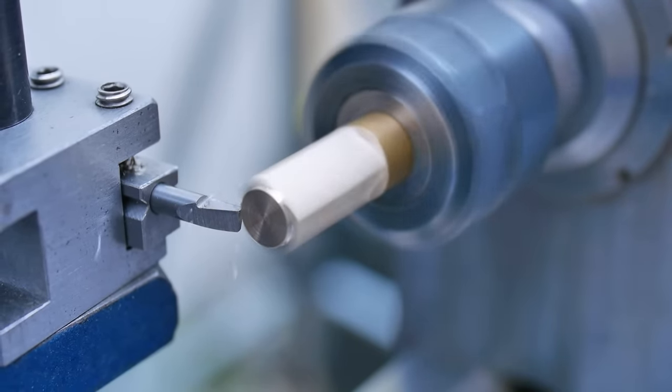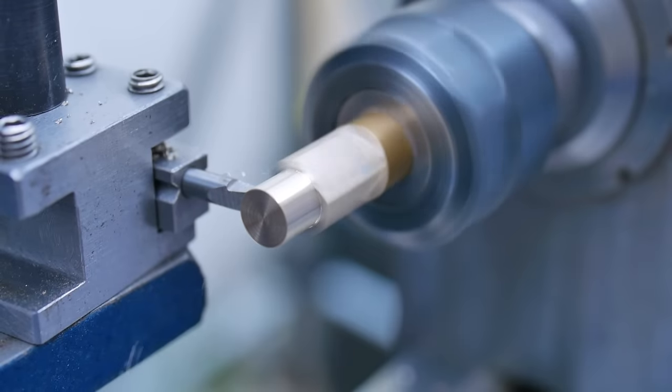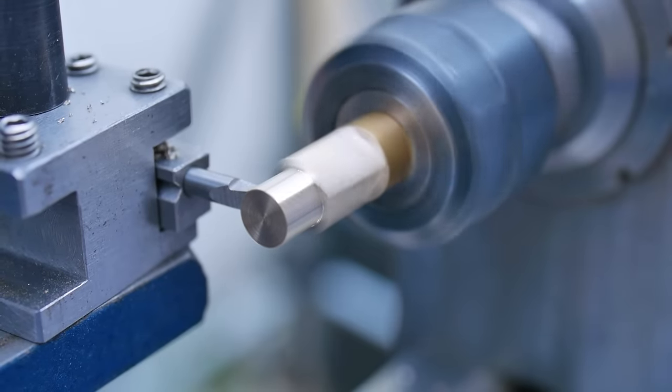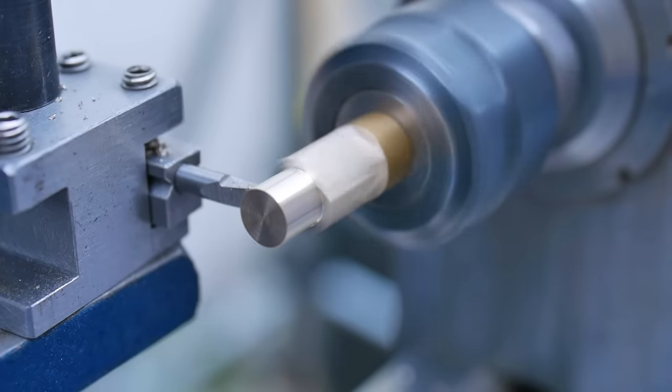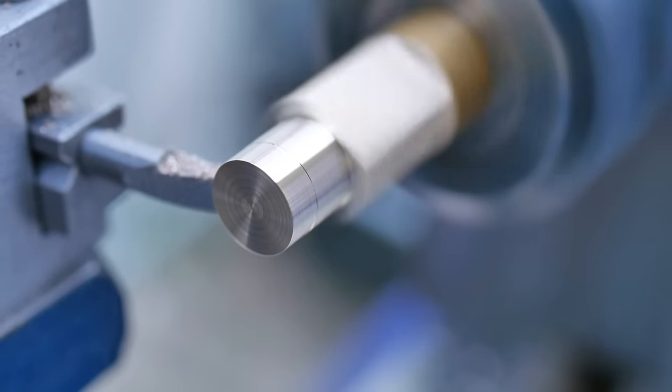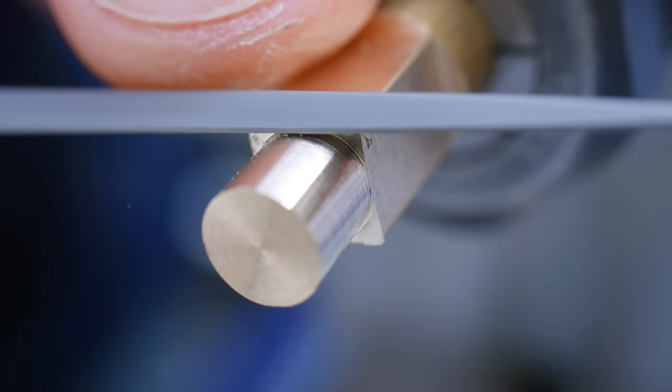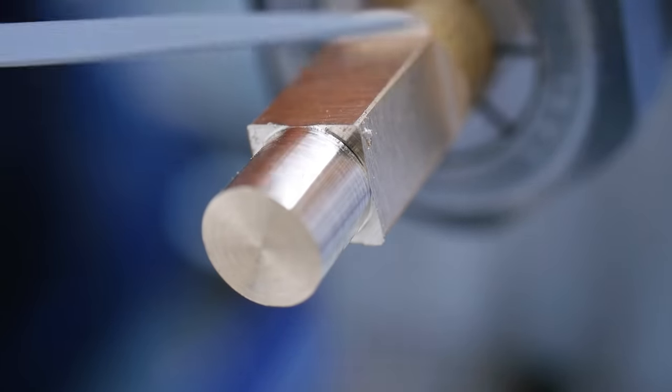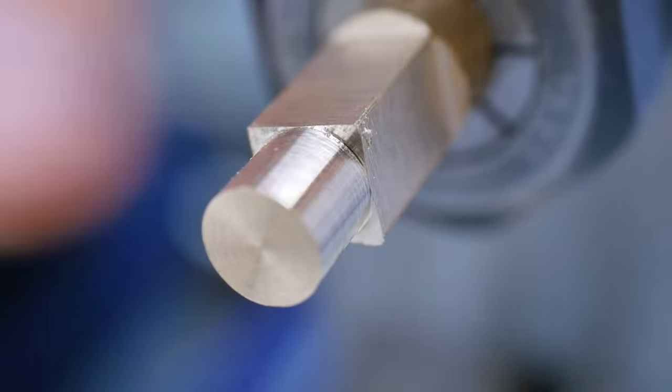The Stirling engine works based on a temperature differential. The cylinder must therefore be cooled. Now I move on to turning the outside of the cooling fins that surround the cylinder. I could have left this a square profile, but I prefer the aesthetics of circular cooling fins.